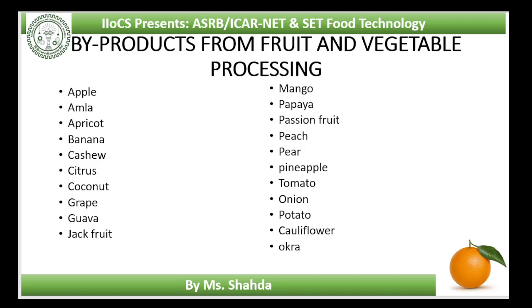Coir husk is a waste left over after extraction of fibre from the coconut husk. Coconut shell is the endocarp of the coconut fruit, available in large quantities near copra-making centres. It can be used as fuel and for manufacturing fancy articles. Since coconut shells are available in different sizes and shapes, they can be polished, carved and decorated with lacquer inlaid with ivory, silver or other metals.